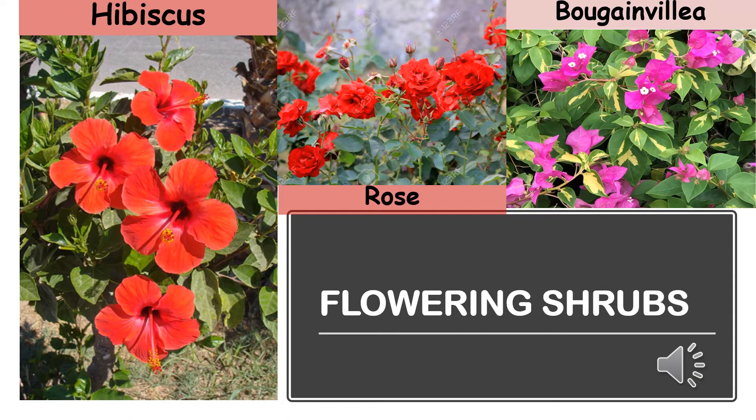Let us look at some examples of flowers that grow on shrubs. One very common example is the rose flower, which is also used as a token of love. You will see that the stem of the rose flower has thorns in it, because it grows on a shrub. Some more examples are hibiscus flower and bhoganvillia. You will also see bhoganvillia growing a lot in your surroundings.